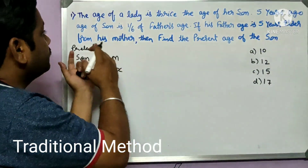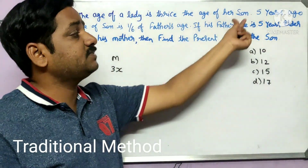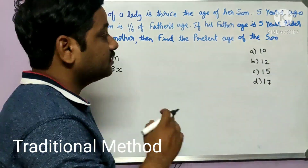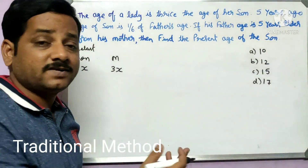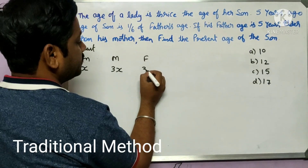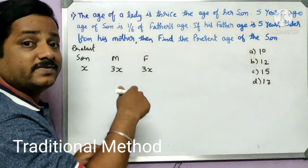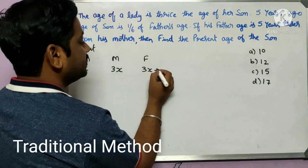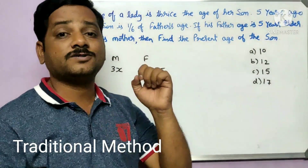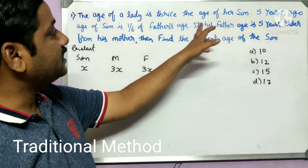Before going to the past condition, let me write one more condition: the father's age is five years elder than the mother. Mother's age is 3x, so father's age will be 3x + 5. This covers the present conditions.